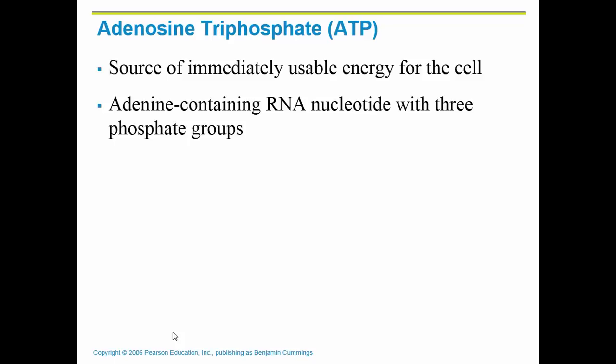One other very important compound in the human body is adenosine triphosphate, or ATP. It is the source of energy that we use. We have to produce ATP at the mitochondria in the cell for immediate energy use, and this will become really important when we start to study the muscular system.